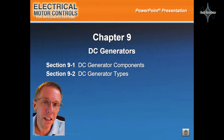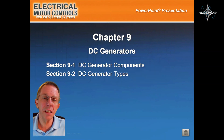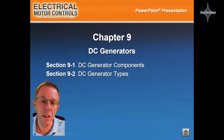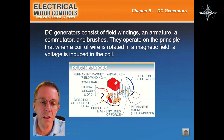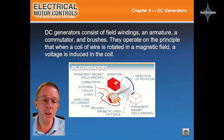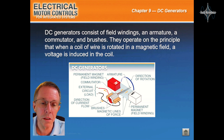Okay everyone, let's take a look at Chapter 9, DC Generators. DC generators consist of field windings, an armature, a commutator, and brushes.